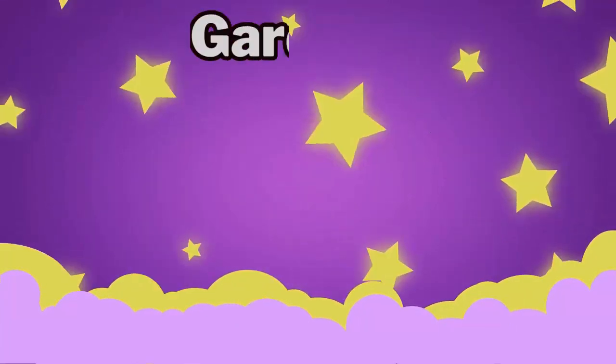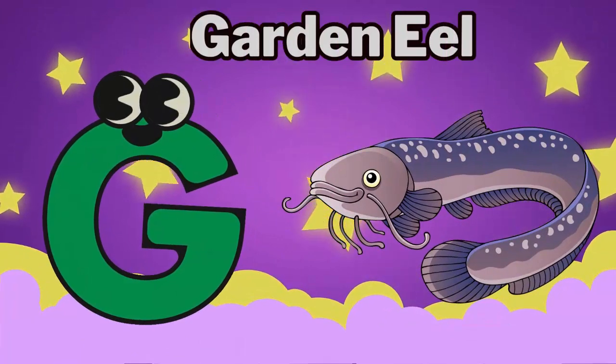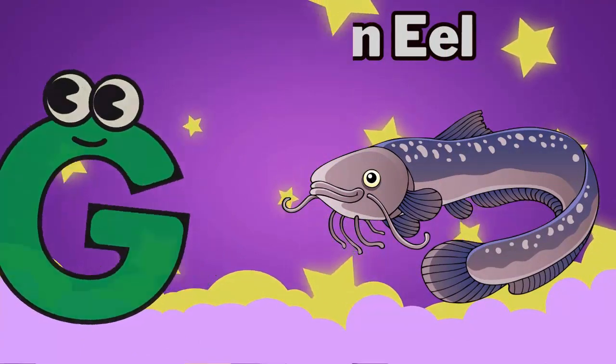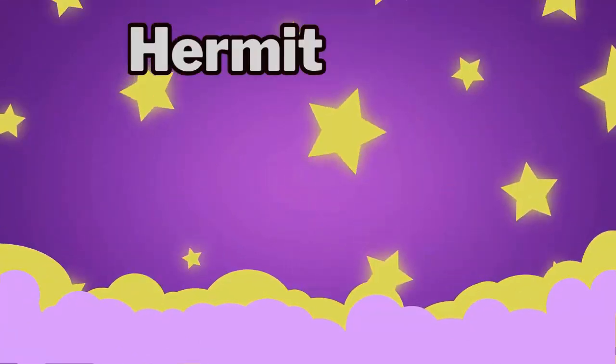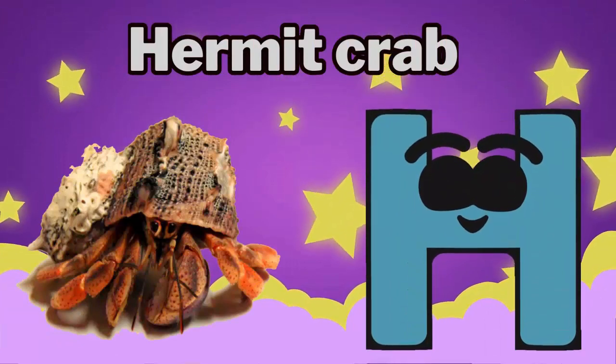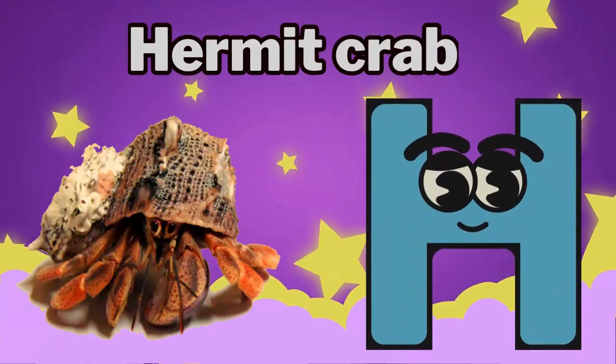G is for garden eel. G, garden eel. H is for hermit crab. Ha, hermit crab.